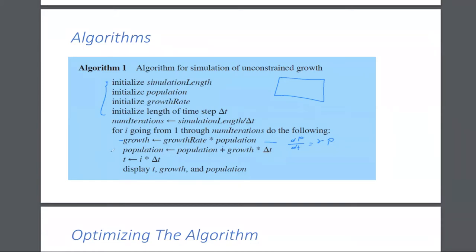The population is equal to nothing but the initial population plus the growth multiplied by delta t. So you just multiply this by delta t — that gives you this. You calculate the growth here and then multiply by delta t, which in this case is one hour if you recall the problem, and that will give you the value here.